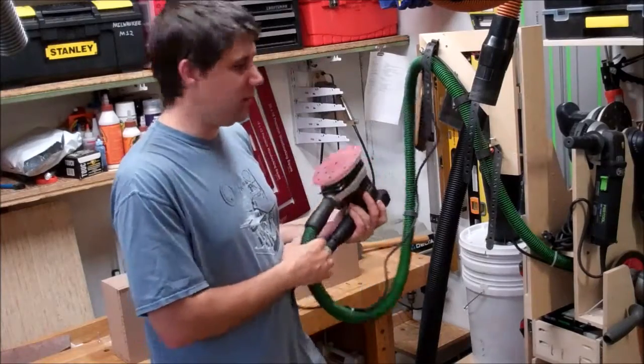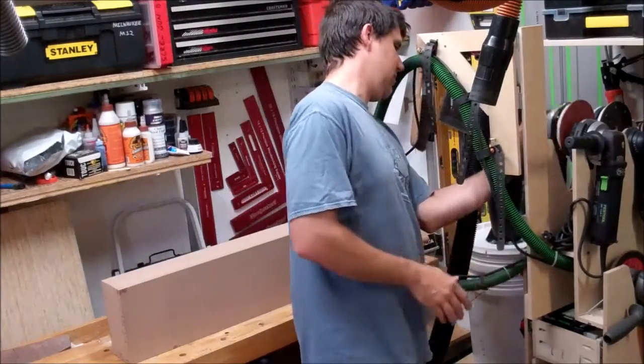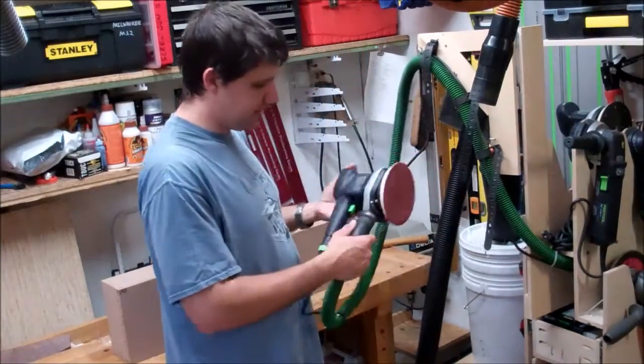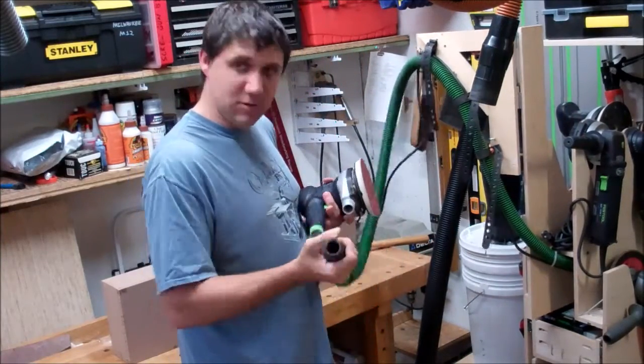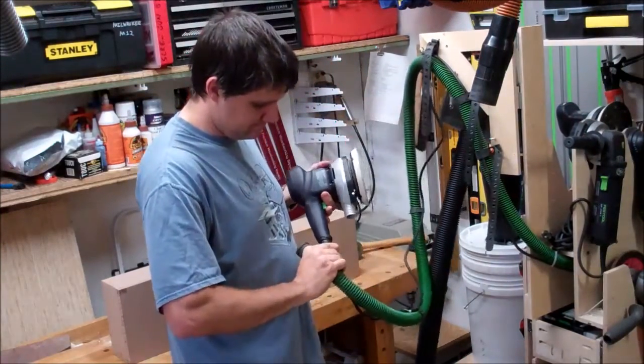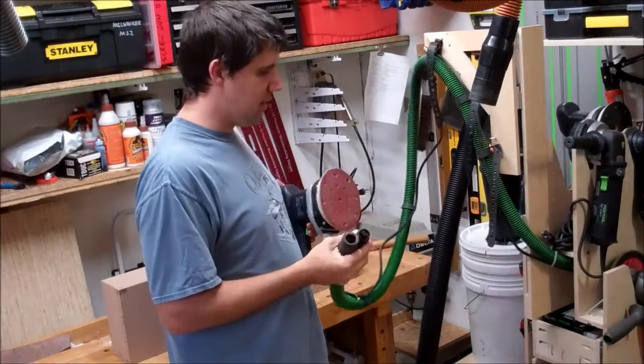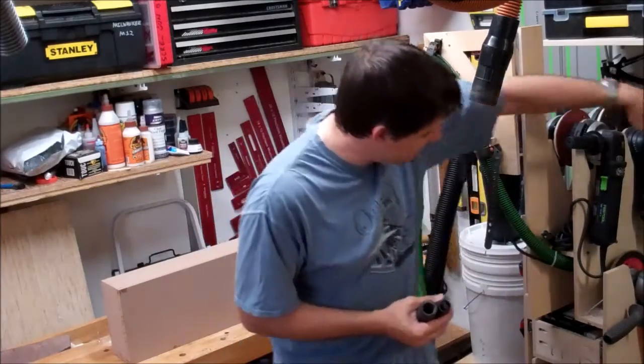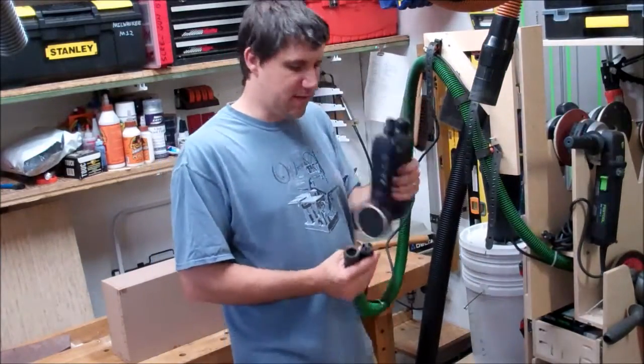I've got it conveniently over here in my sander cart where it hangs nicely. With the cart, it's easily attachable to both suction and electric. The way I've built this cart, I can easily switch between the ETS-150 and an RO-90.